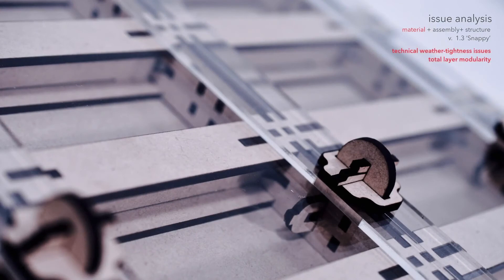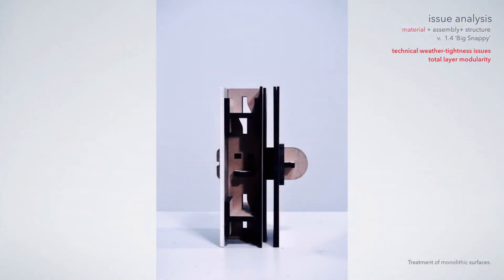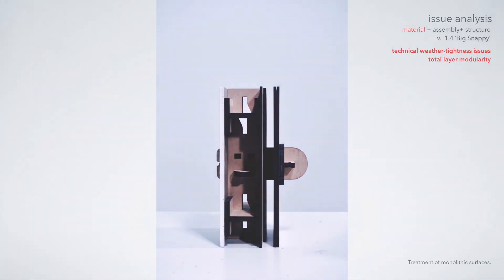This is good progress. However, the system is overly complex and requires specialist CNC fabrication. In an effort to understand the issues caused by over design, a one-to-one model has been built. This model begins to critique the assembly's technical weather tightness capabilities and concerns regarding modularity at a larger scale.